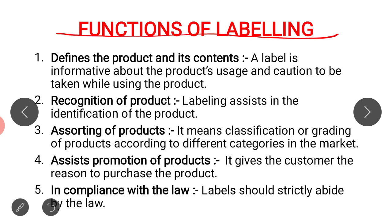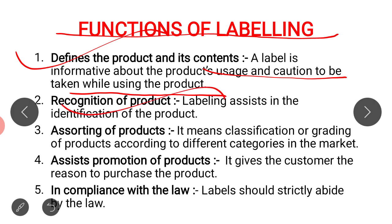Now we have another important topic — the functions of labeling. The first function performed by labeling is that it defines the product and its content. As I already told you, a label tells you what the product is, what its uses are, and provides information about what cautions you should take when using a product. For example, Red Label Natural Care Tea completely mentions that it has five ingredients, and that these five ingredients boost your immunity.